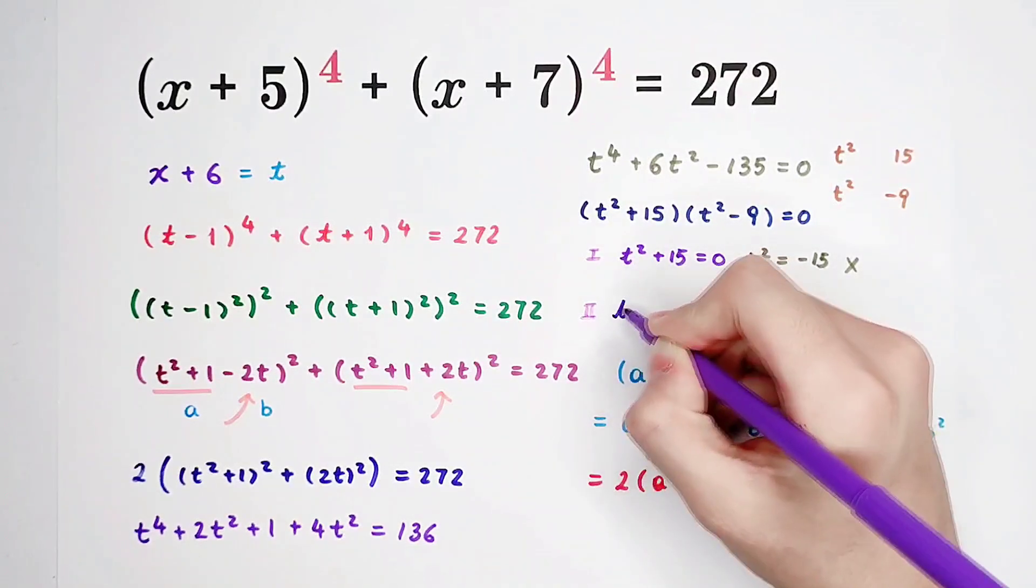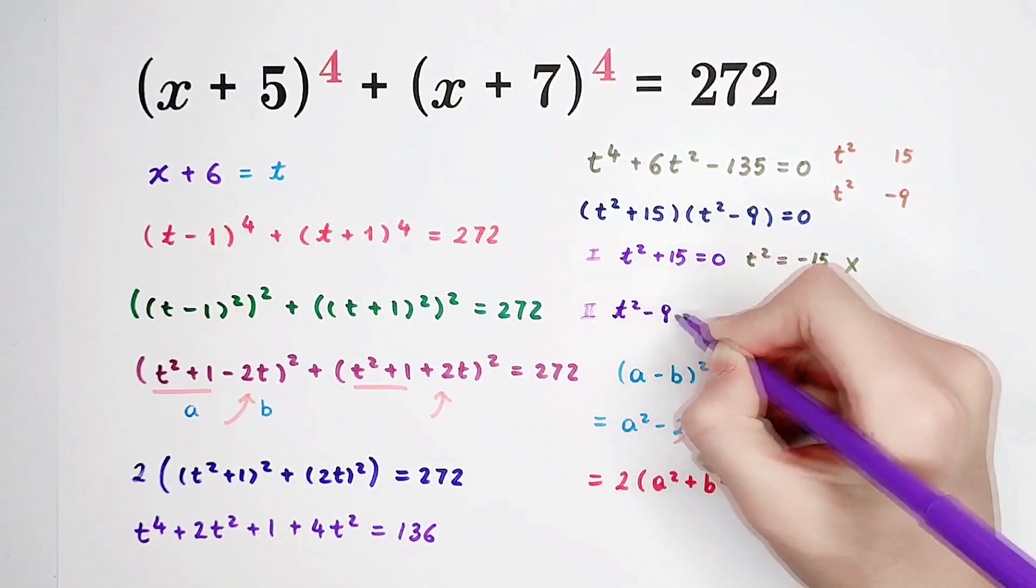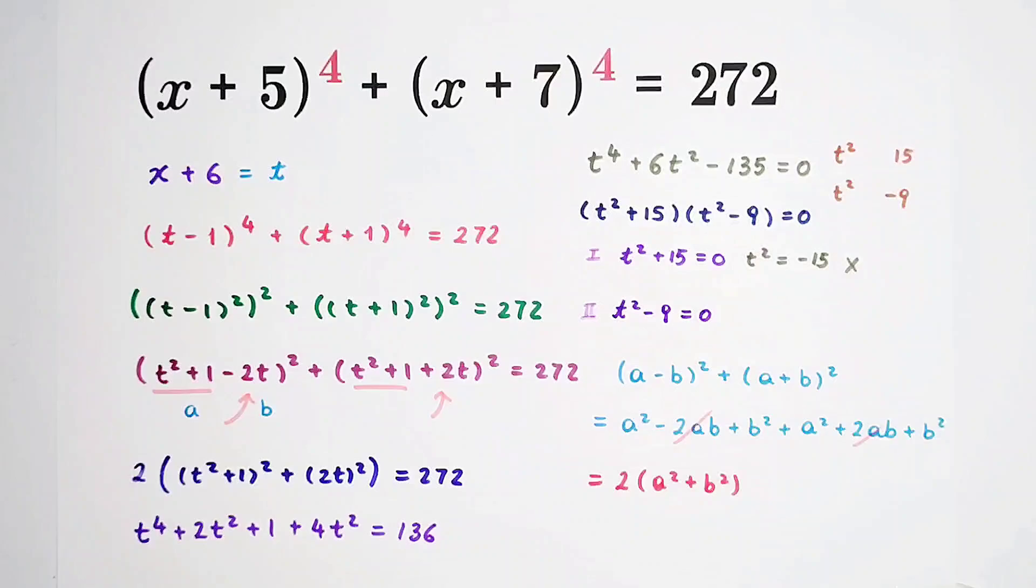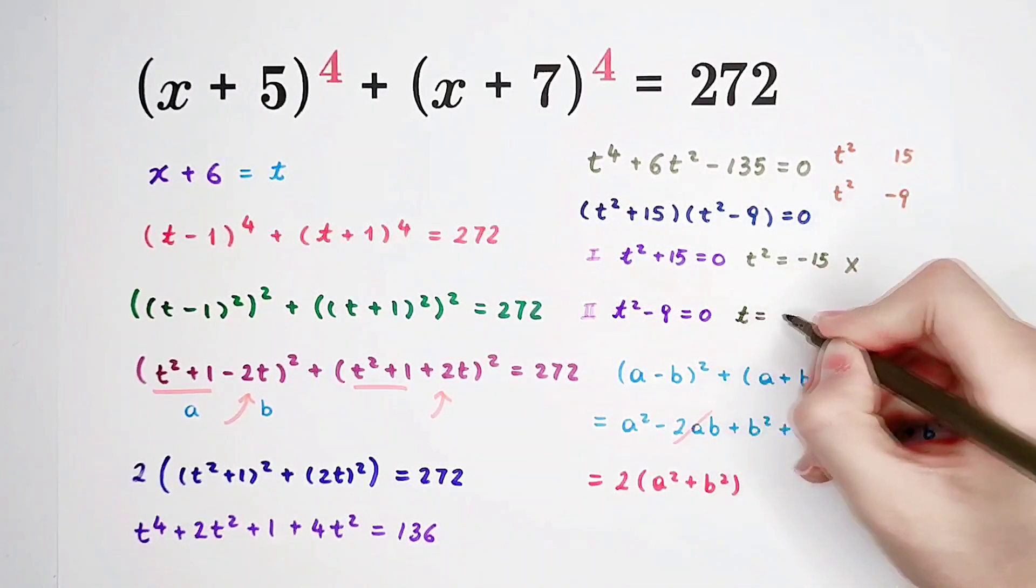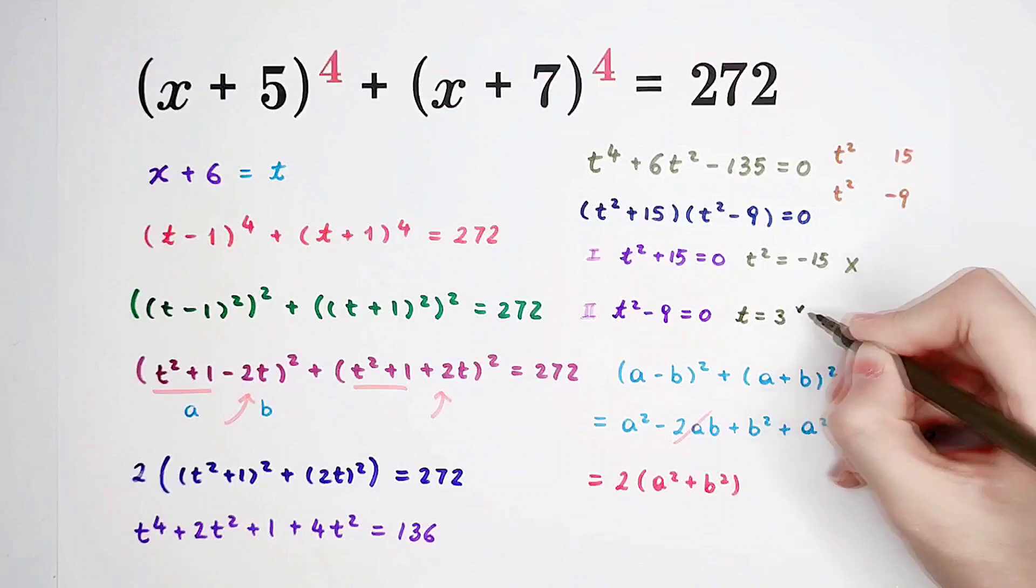In our second case, t squared minus 9 equals 0. So t squared is 9. So that means t is 3 or negative 3.